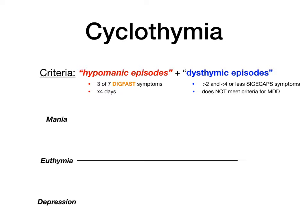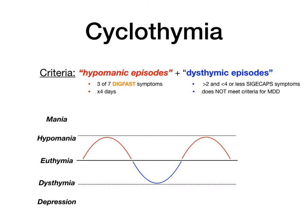On the graph, instead of mania and major depression, cyclothymia shows hypomania and dysthymia alternating. The patient has episodes where they're up — but just hypomanic, with three of seven DIG-FAST symptoms for at least four days — and when they're down, they have at least two but no more than four SIG-E-CAPS symptoms that never meet criteria for MDD. This alternation happens for at least two years — high yield.